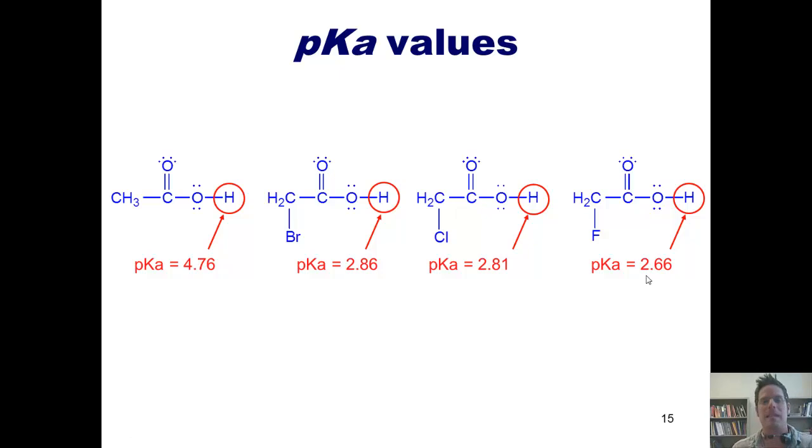Remember, pKa values, as they go down, that means that the acidity of the proton goes up. So the lowest pKa value on this slide is the one over here on the right, which means that this is the most acidic proton, which should make sense because it is neighbored by a fluorine, which is the most electronegative and hence the most sucky of all of these different options.